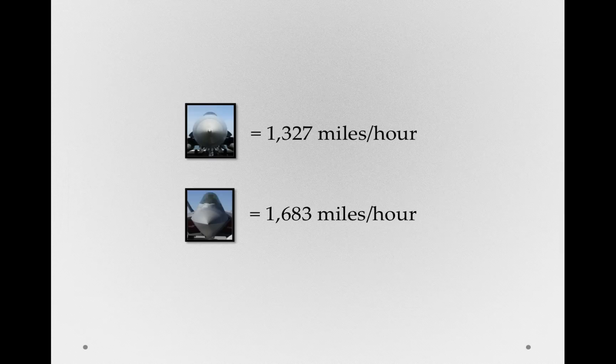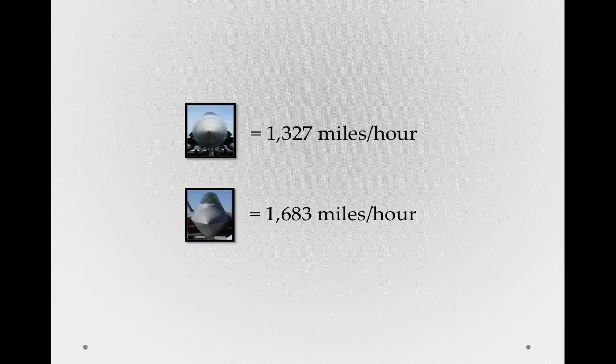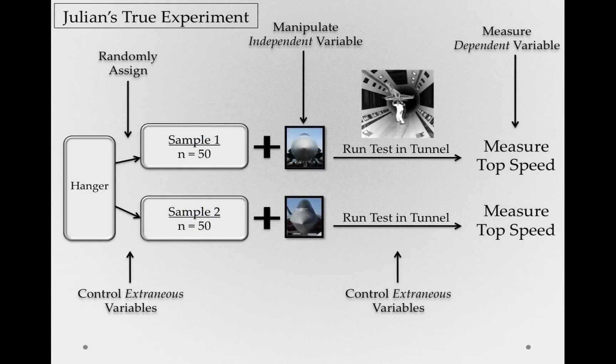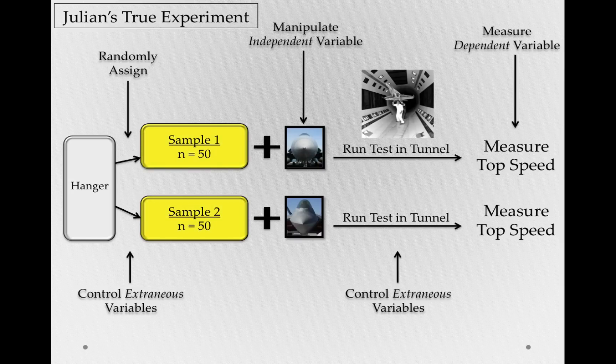Now suppose we do this, and we end up with identical average measurements. So the planes that we manipulated to have the conical type nose have a top speed recorded at 1,327 miles an hour, and the planes we manipulated to have the raptor noses achieve the top speed of 1,683 miles an hour. So if we go back and try to play the game of what other things might have caused this difference, it becomes incredibly hard to find any systematic difference between these two sets of planes other than our manipulation.